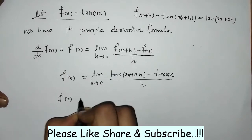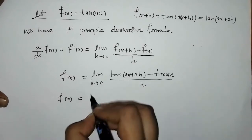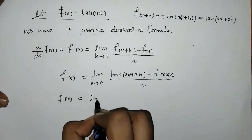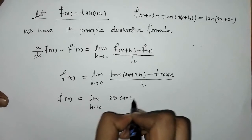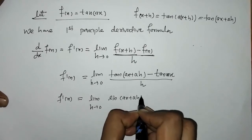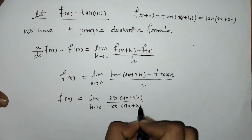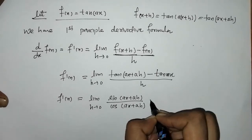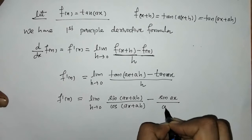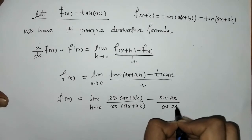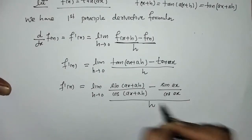Now we can write tan as sin by cos. So here we will have sin of ax plus ah upon cos of ax plus ah, minus sin of ax upon cos of ax, all divided by h.